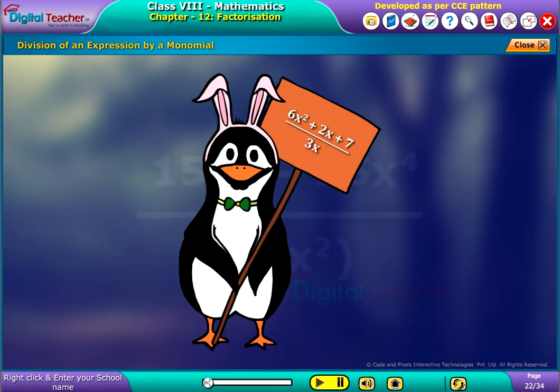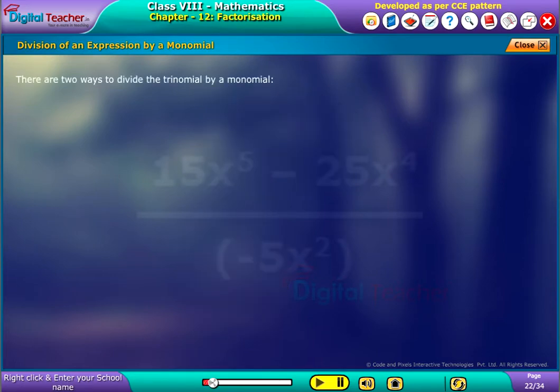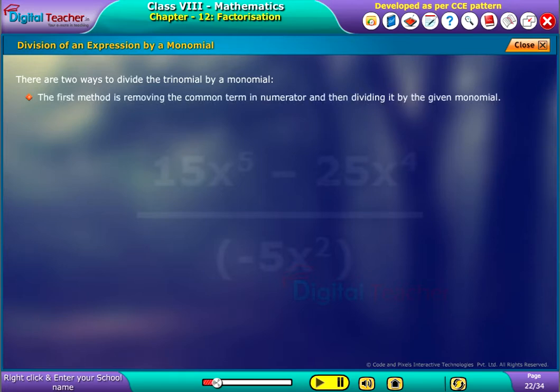Let us consider the division of an expression by a monomial. There are two ways to divide the trinomial by a monomial. The first method is removing the common term in numerator and then dividing it by the given monomial. The second method is by dividing each term in the numerator by the given monomial.